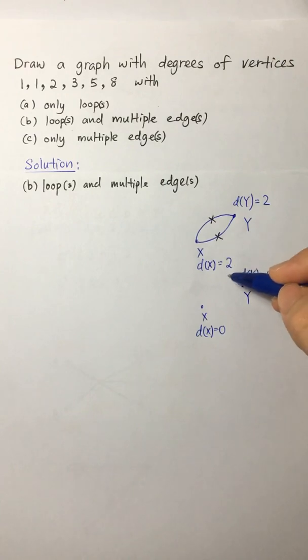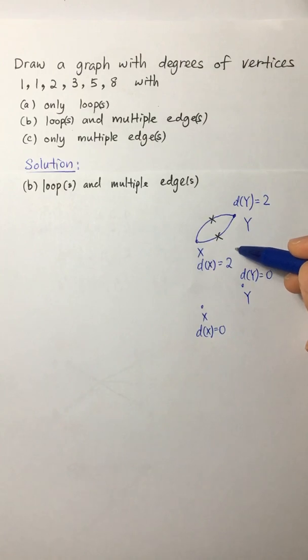So now we can see that a pair of multiple edges is actually contributing to 4 degrees of vertices. So if we add a pair of multiple edges, we need to add 4 degrees of vertices. And if we remove it, we need to minus a total of 4 degrees of vertices. So we are going to use this fact to solve our question later.